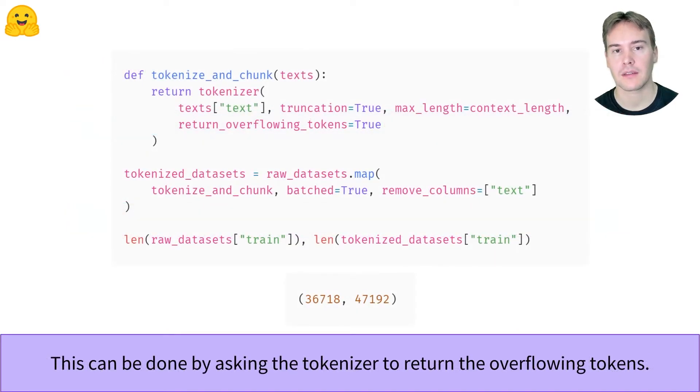Here is how we can apply this in practice, by just adding the return_overflowing_tokens option in our tokenizer call. Note how this gives us a bigger dataset.